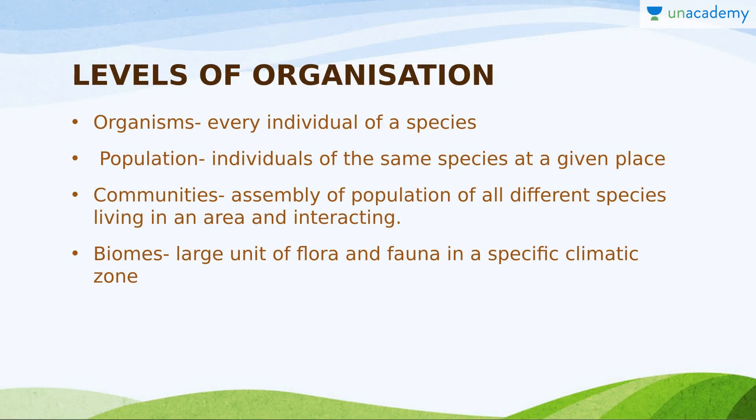There are some levels of organization in ecology. Starting from the very initial level: first there is the cellular level of organization, then the tissue level, then the organ level, and finally the organ system level of body organization. Once the body is formed and an organism is formed, we move to the levels of organization of the ecosystem. The organism is the unit of the ecosystem, just as the cell is the unit of the organism.